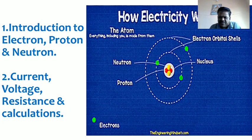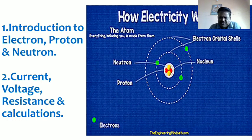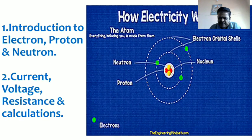Current is denoted by the letter I, and its unit is amps. The measuring instrument used to measure current is called an ammeter. The external force which drives the randomly moving electrons to move in one particular direction in a material is technically called EMF — that is, electromotive force, meaning the force which moves the electrons. In general, EMF is also called voltage, denoted by the letter V, measured in volts, and the instrument used to measure it is a voltmeter.